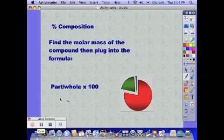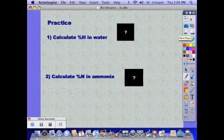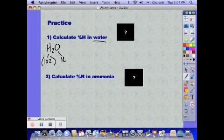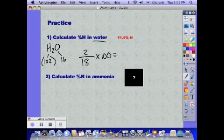Alright, percent composition. Just like any percent, it's the part that you're looking for over the whole thing. So you need to find the molar mass of the entire compound and then find the mass of what you're looking for. So it says calculate the percent hydrogen in water. Water has the formula H2O. Hydrogen has a mass of 1, so we have two of them. And oxygen has a mass of 16. So my mass of hydrogen is 2 over the mass of the entire compound which is 18 times 100 gives me 11.1% hydrogen.